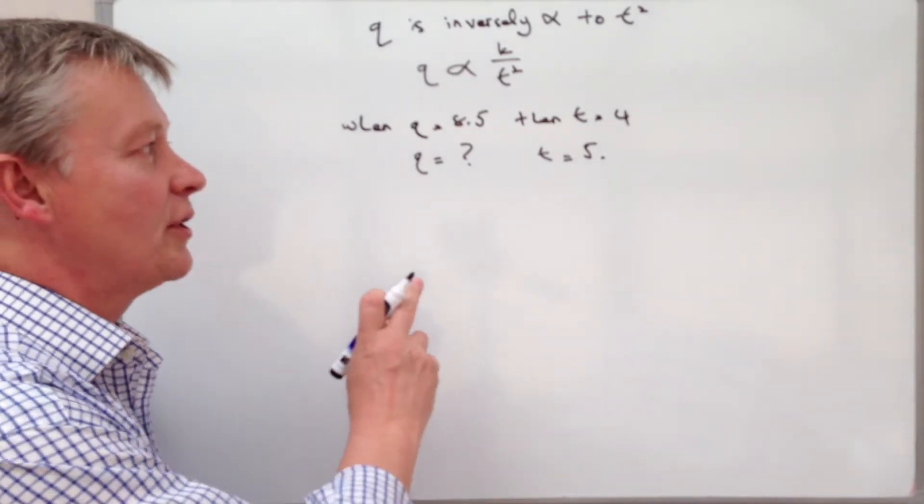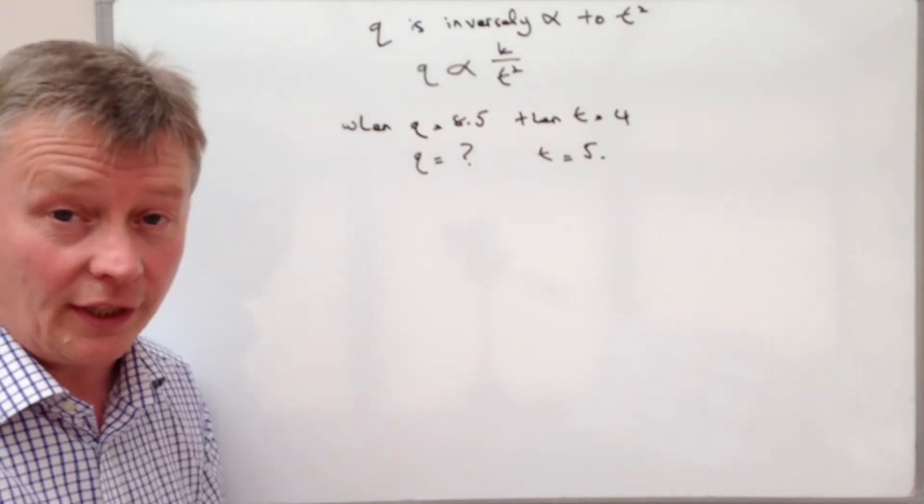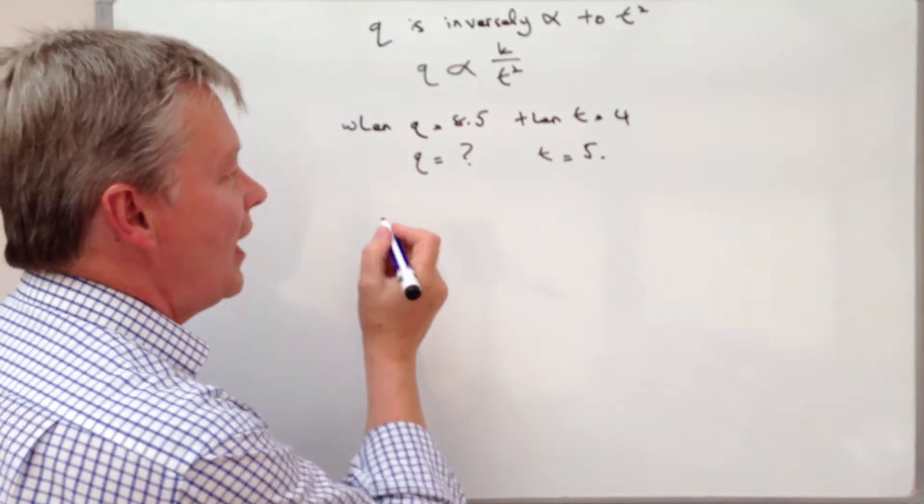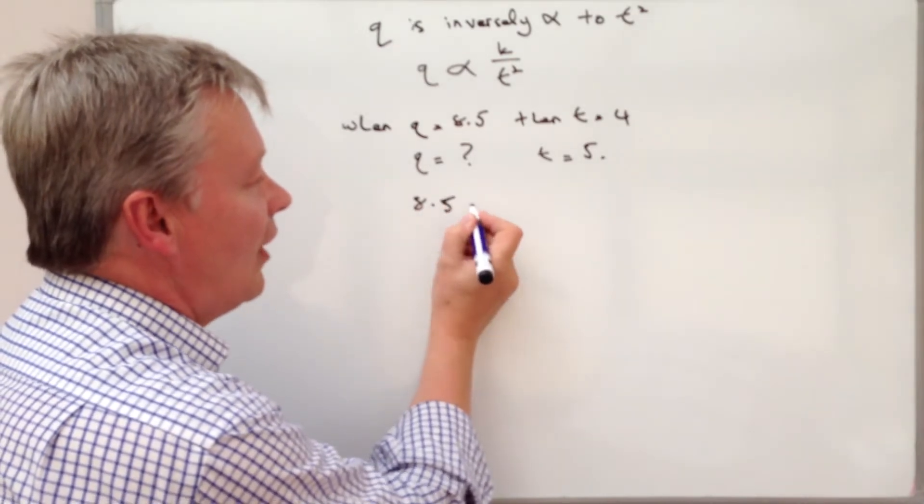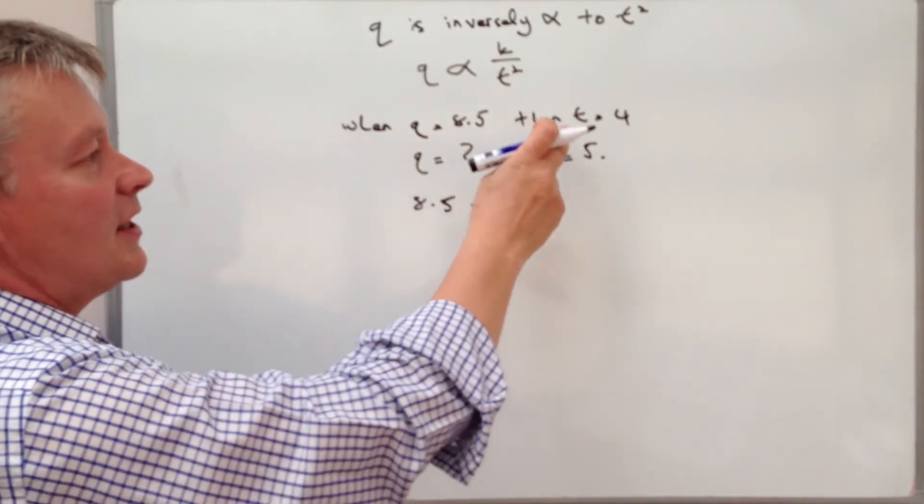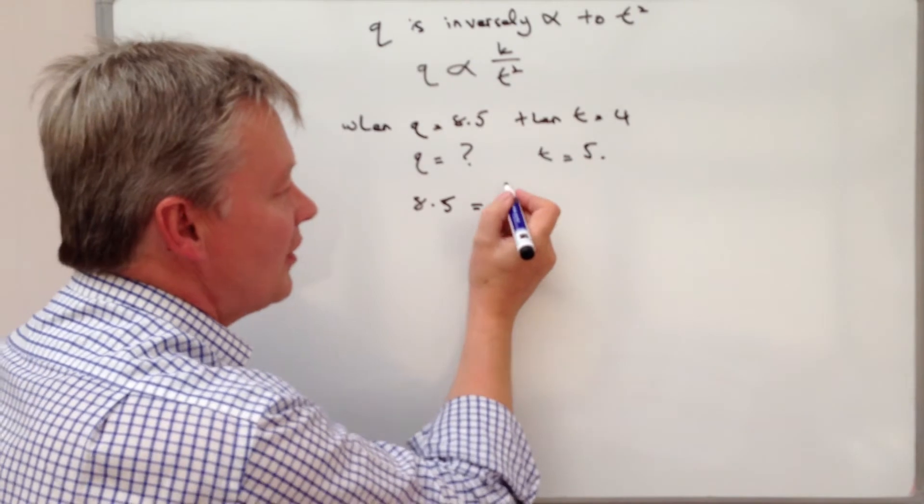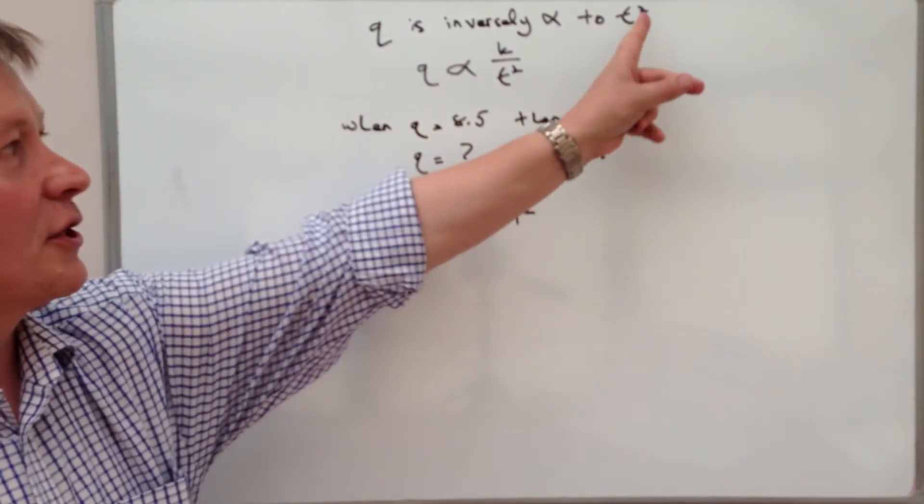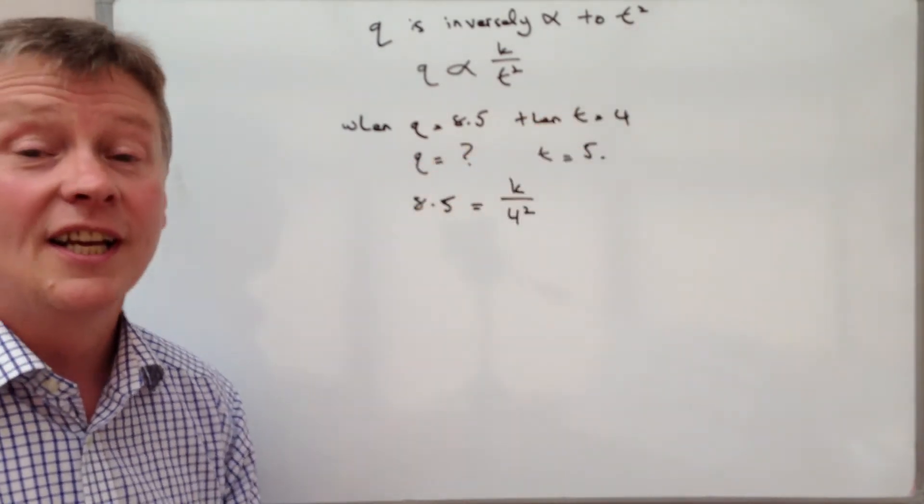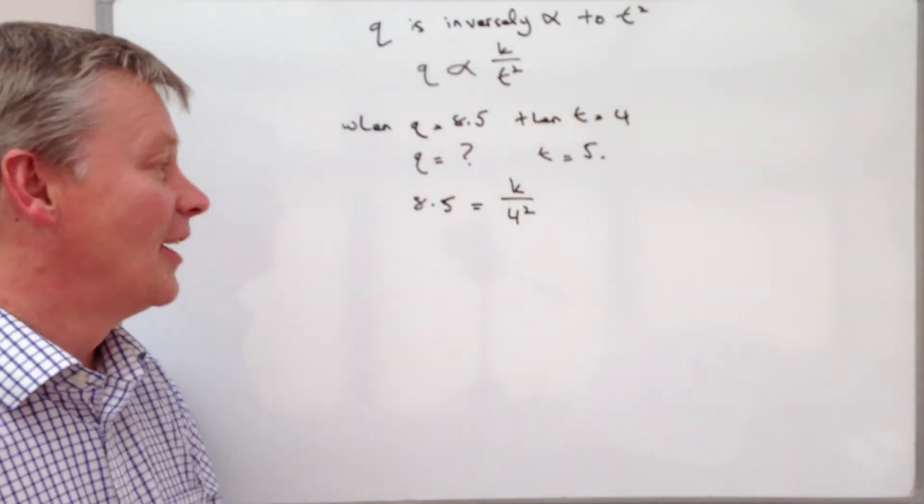So what we need to do first is use these two values to work out the value of K. So what we're saying is that when Q equals 8.5, then T equals 4, so it's going to be K divided by 4 squared because the relationship is inversely proportional to T squared.